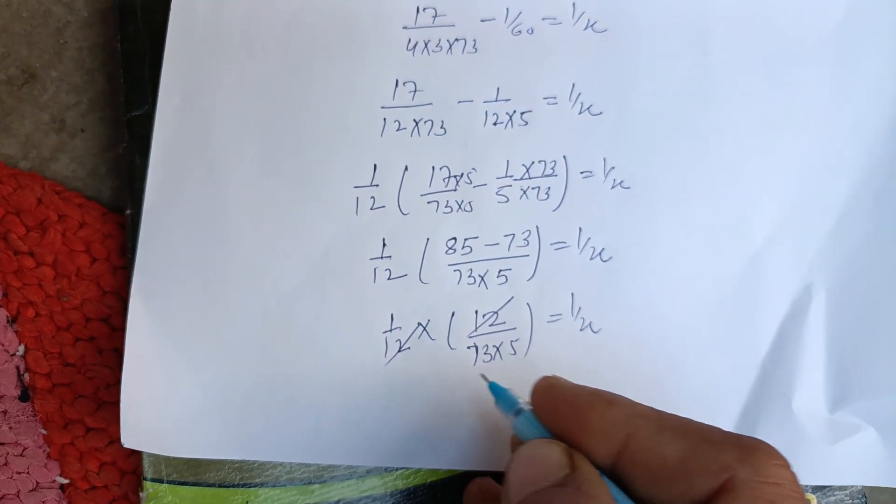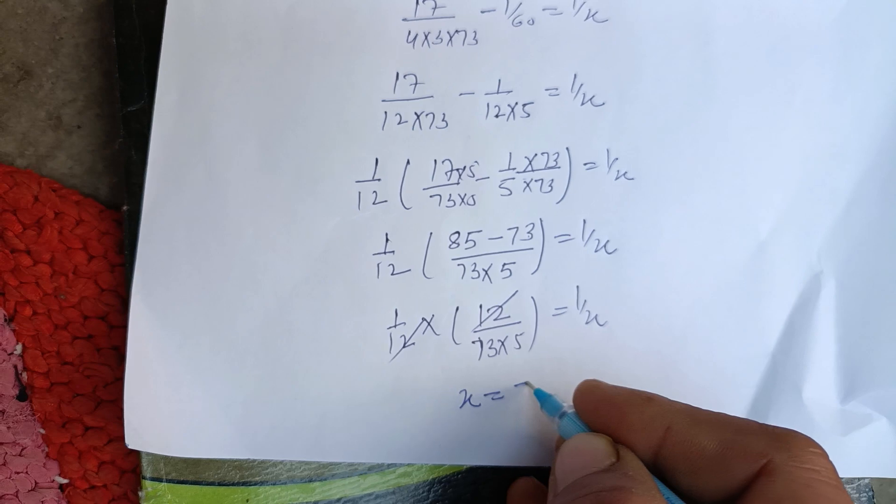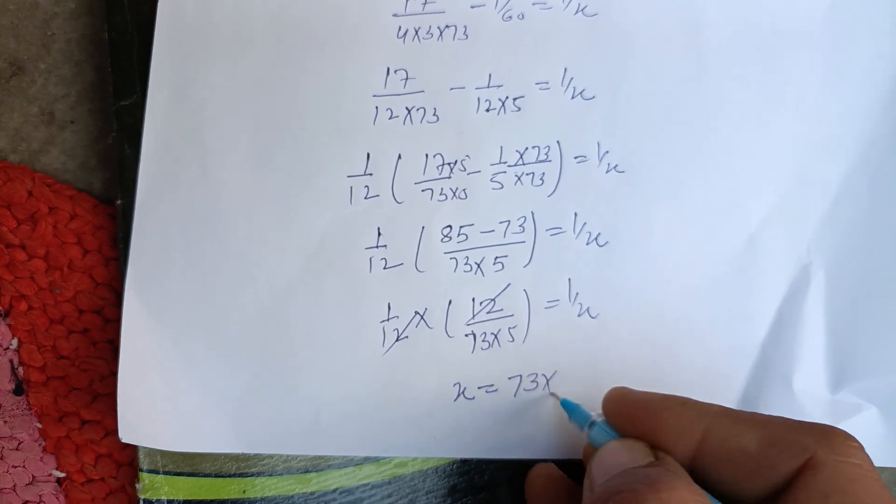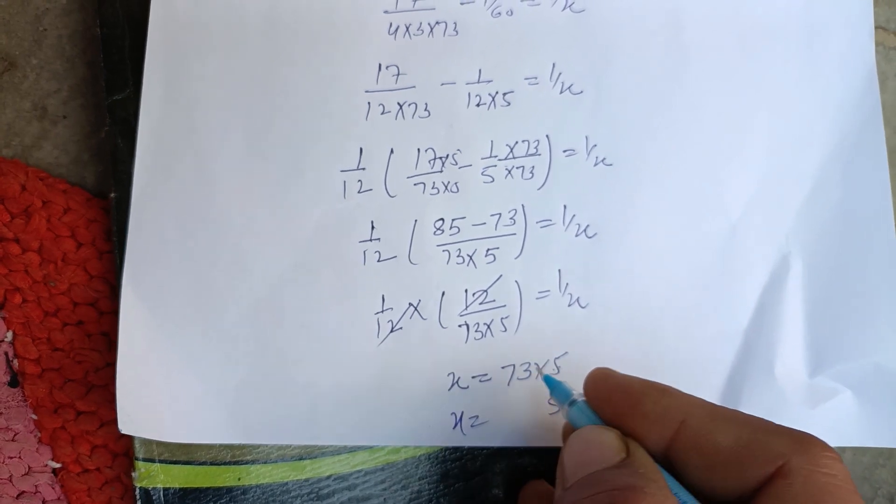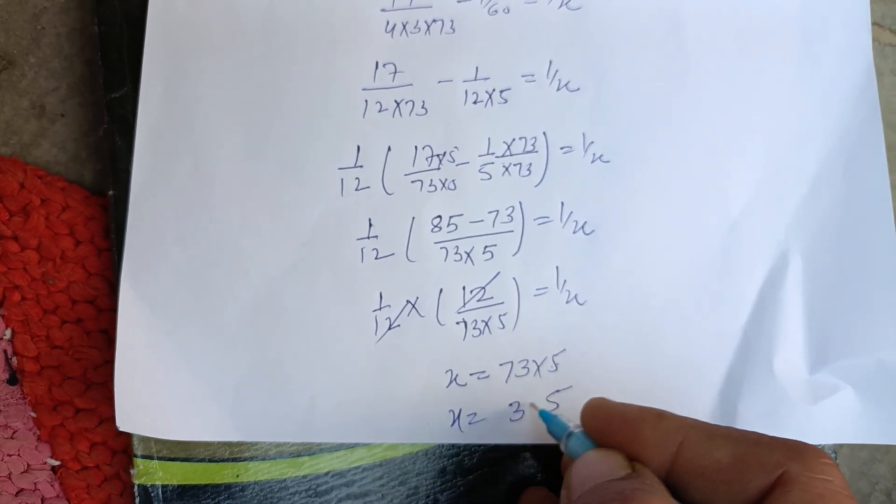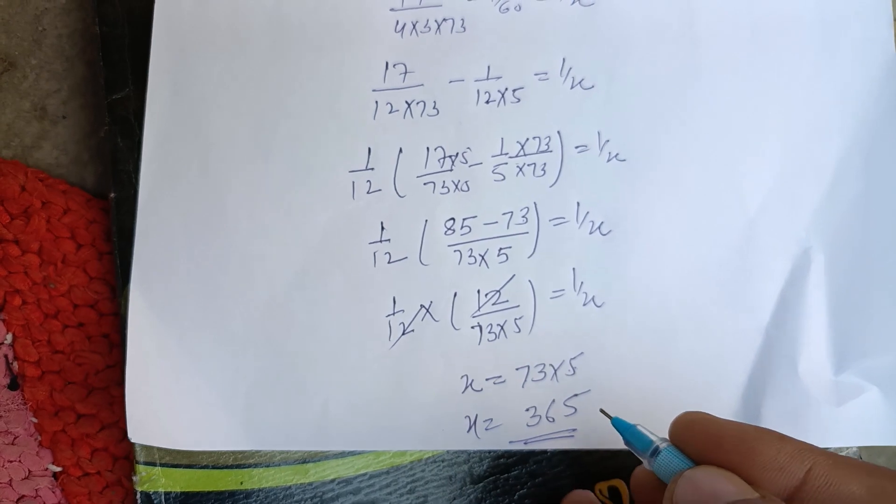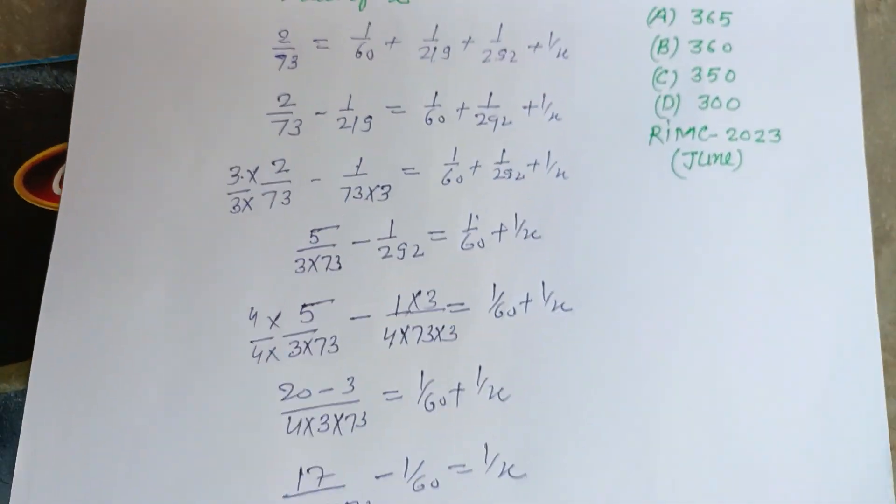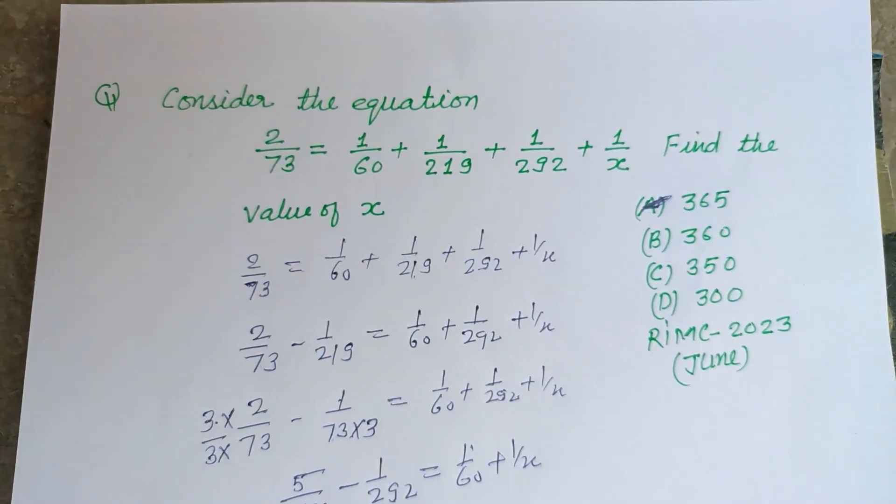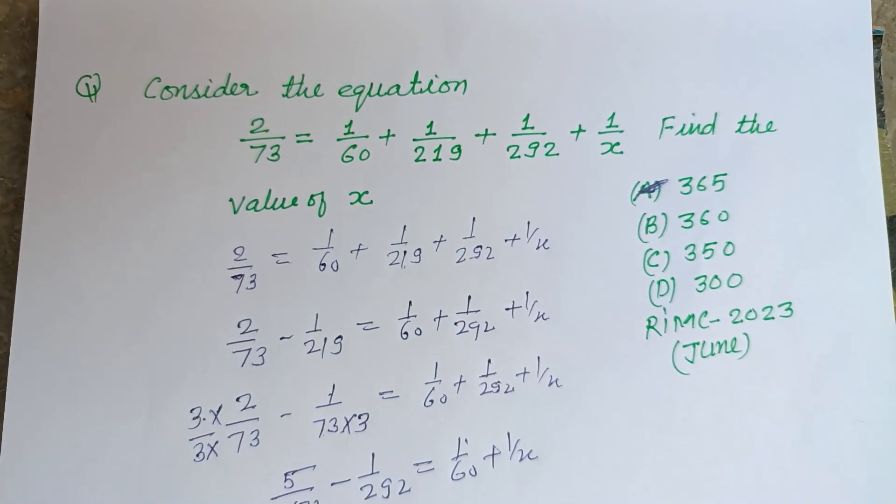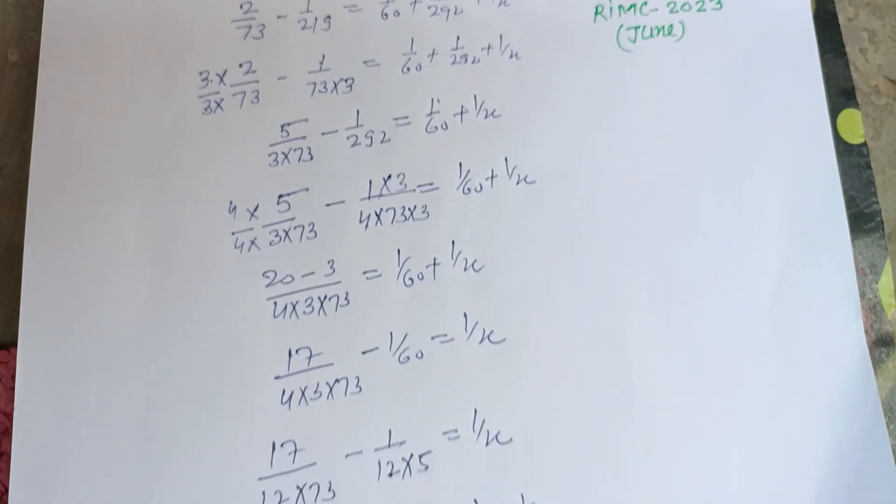When we reverse the number, we get x = 73×5. 5×3 is 15, 5×7 is 35, so 365 is the correct answer of this question, which is found in option A. Therefore option A is correct. I hope you got it, please like the video, subscribe to the channel, thanks for watching.